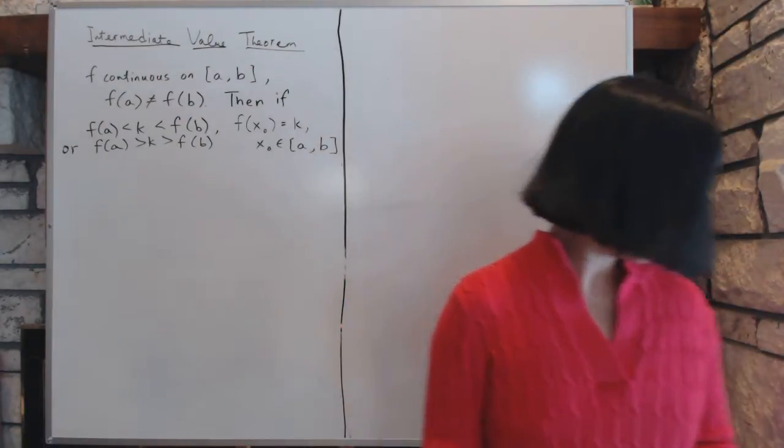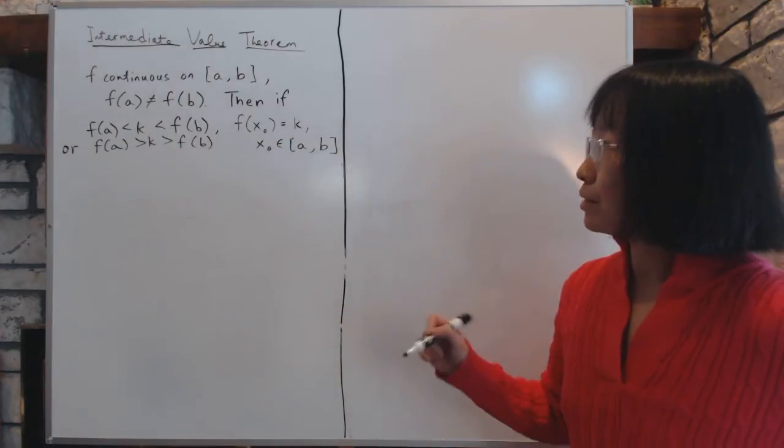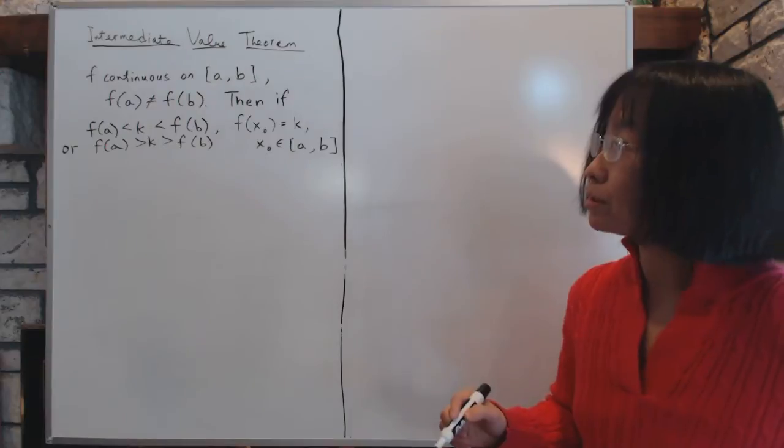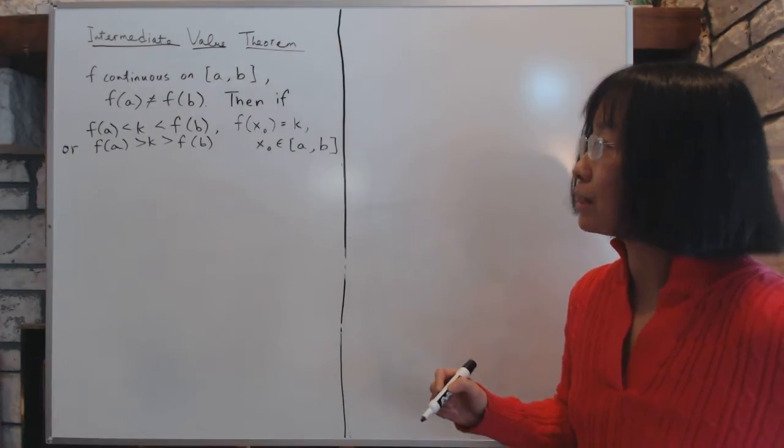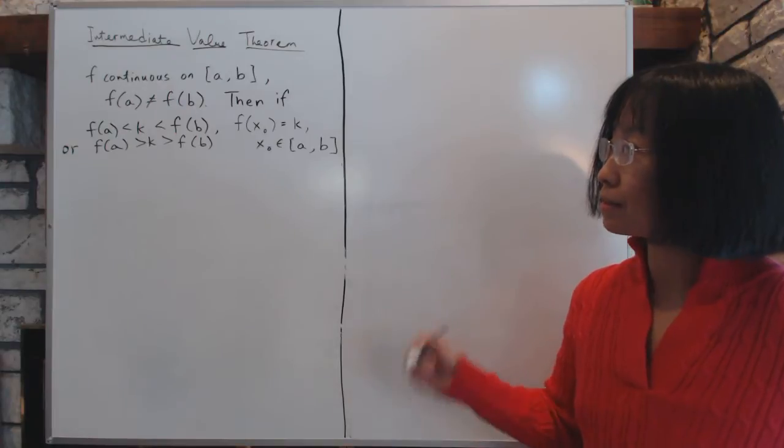In section 3.3, we're going to prove the intermediate value theorem. The intermediate value theorem states that if you have f, which is a continuous function on the closed interval [a, b], and assuming that one end is not exactly the same as the other...